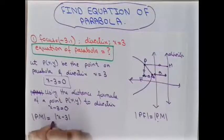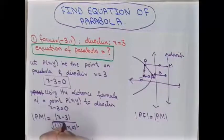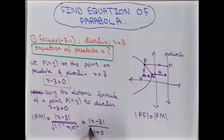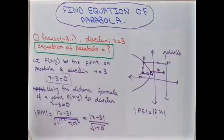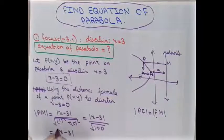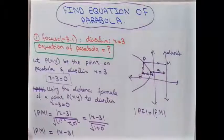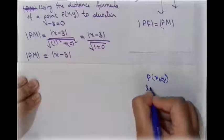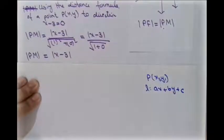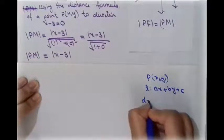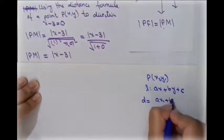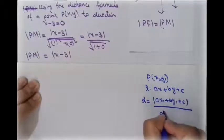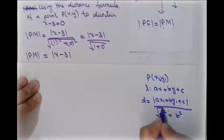Applying the point-to-line distance formula, PM = |x − 3| / √(1² + 0²), which simplifies to |x − 3|. The formula used here is: given a point (x₁, y₁) and a line ax + by + c = 0, the distance d = |ax₁ + by₁ + c| / √(a² + b²). Substituting the values of the coefficients gives us PM = |x − 3|.